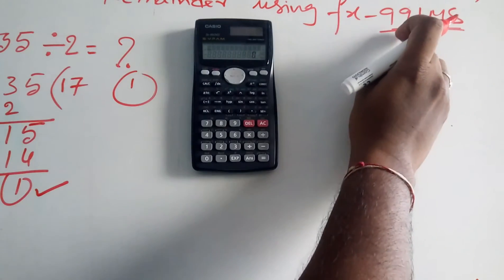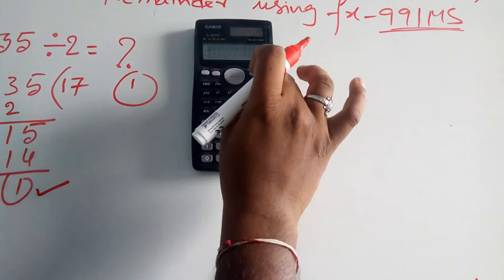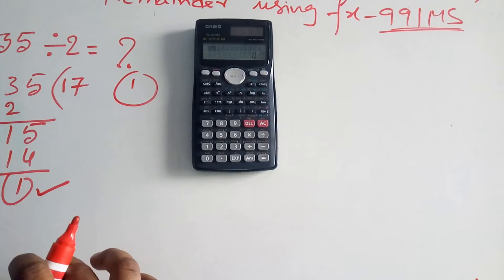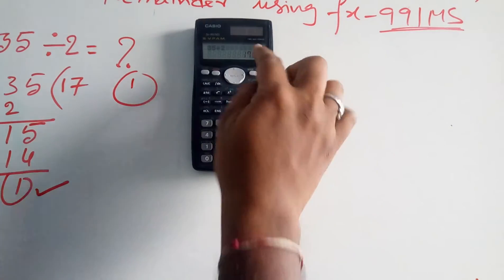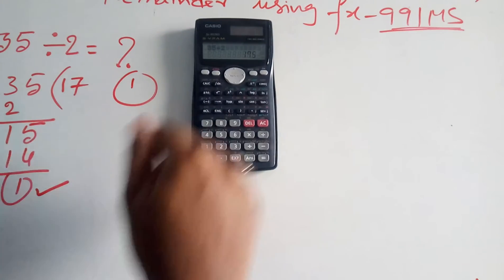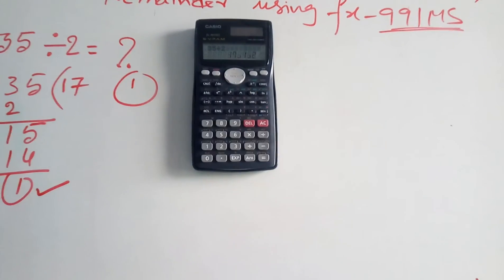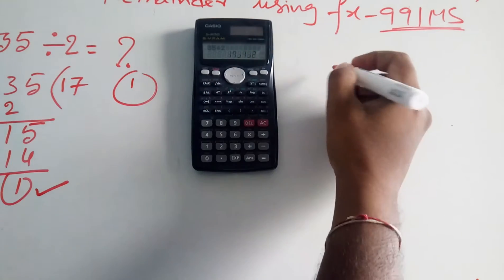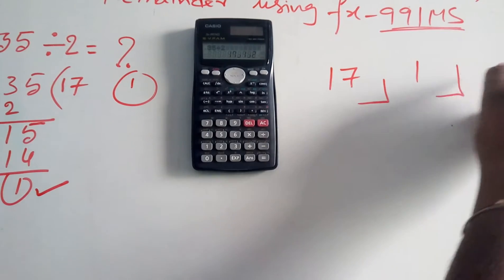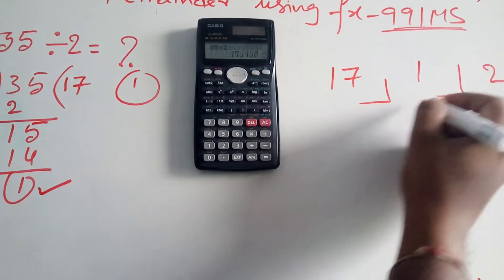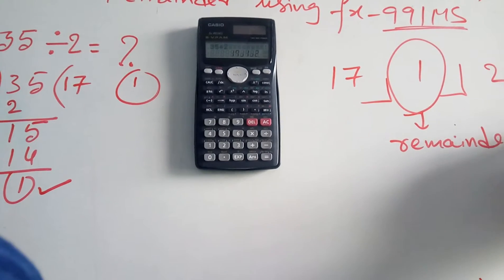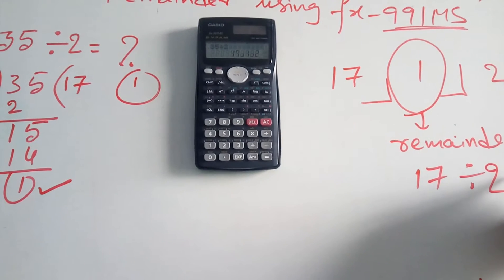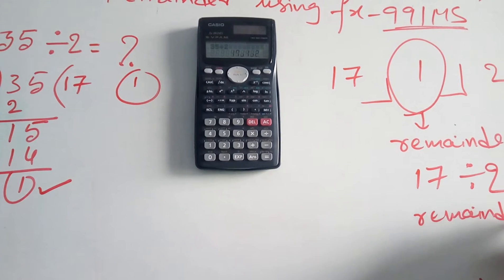Now let's find the remainder using the FX-991MS calculator. First, turn on the calculator. Enter 35, then the division symbol, then 2, press equal — you get 17.5. Then simply press the a b/c button. It automatically displays 17 remainder 1 — meaning the remainder of 35 divided by 2 is 1, and the quotient is 17.